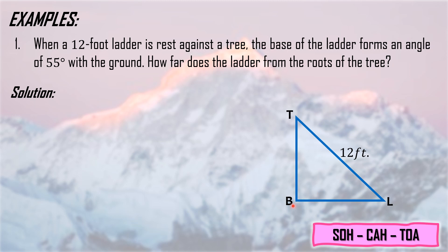The base of the ladder forms 55 degrees with the ground. So this is the bottom of the ladder. We place the 55 degrees here. The question is, how far does the ladder from the roots of the tree? We place the variable X here since we don't have a given measure yet.